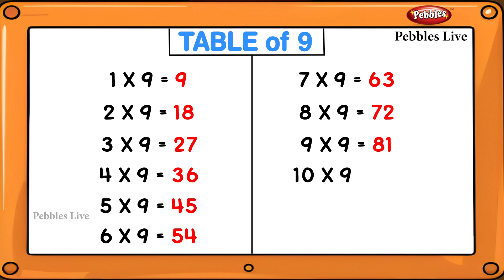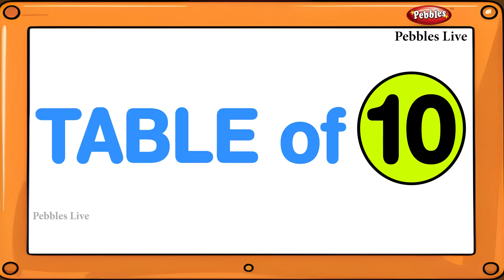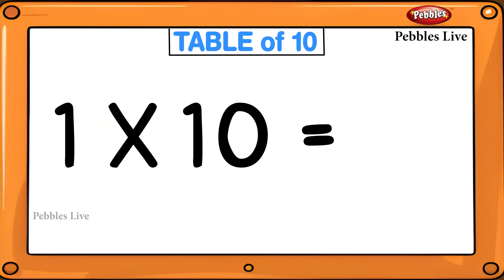Eleven nines are ninety-nine, twelve nines are one hundred and eight. Table of Ten: 1 ten is 10.